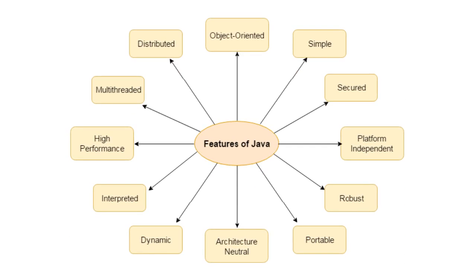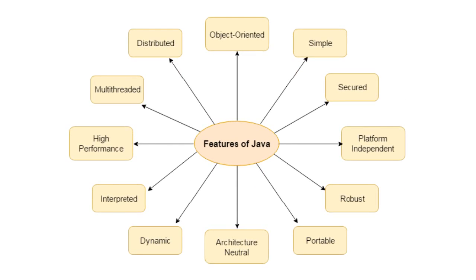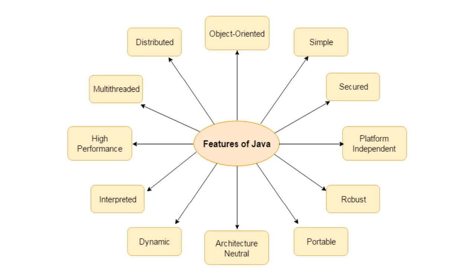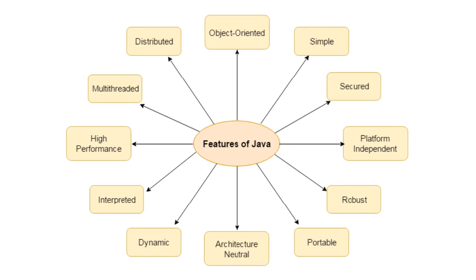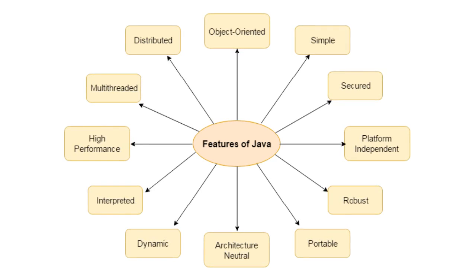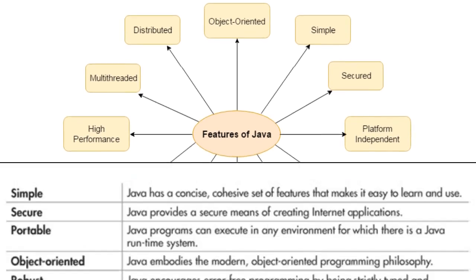Now let us discuss about the features of Java. There is a big list here. The features include simple, secured, platform independent, robust, portable, architecture neutral, dynamic, interpreted, high performance, multi-threaded, distributed and object-oriented.